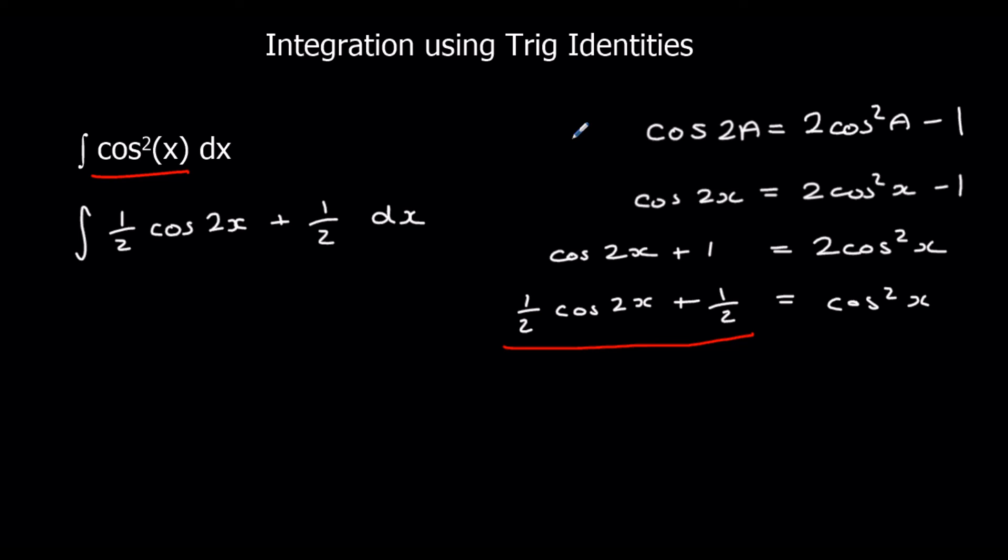So cos2x goes to sin2x. And I divide by the bracket differentiated, which is 2. So half divided by 2 is a quarter. And I've got half integrated, which is half x. And plus c. So there's my answer.